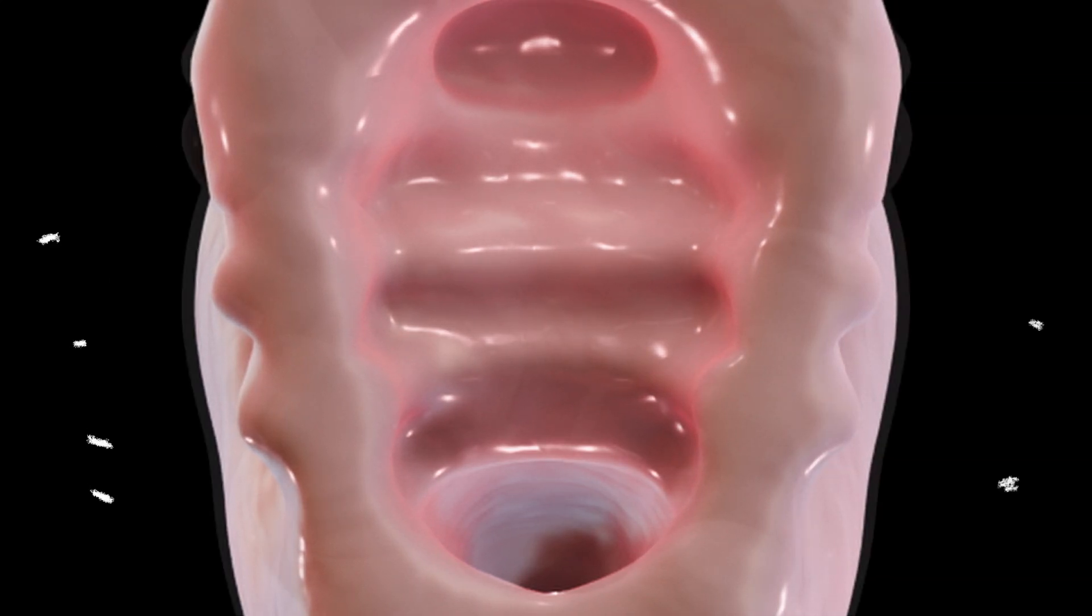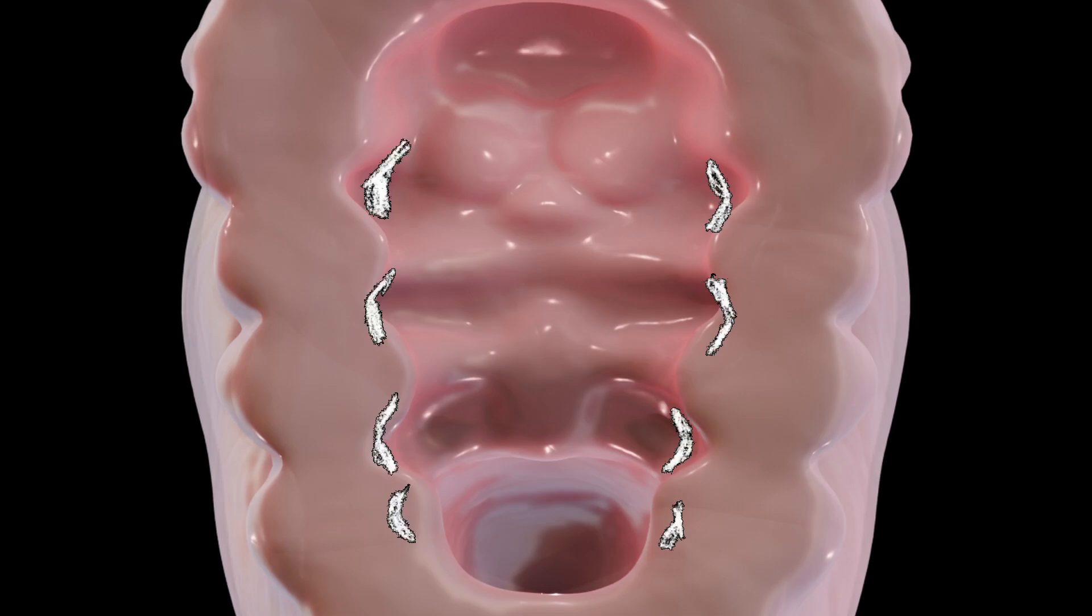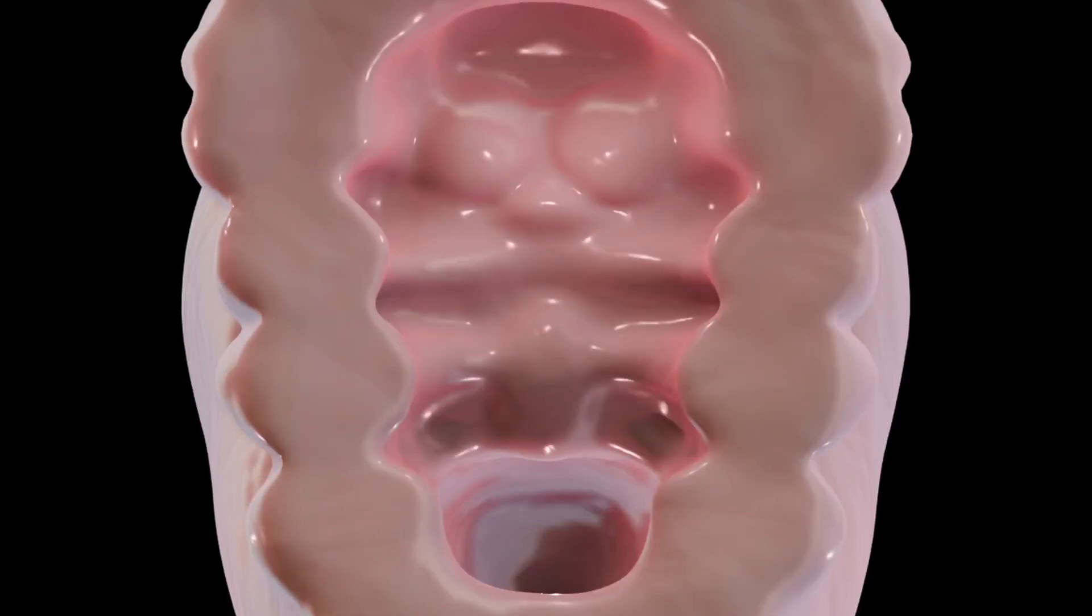By the end of this process, we have four pharyngeal grooves on the outside that are made of ectoderm, four pharyngeal pouches on the inside which form the endoderm, and six pharyngeal arches in between, made of mesoderm and neural crest cells, or mesenchymal tissue.